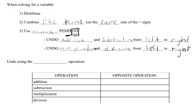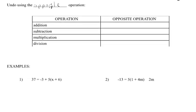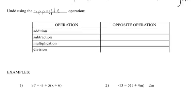You undo using the opposite operation. What is the opposite of addition? Well, if you add money to your bank account, that's putting money in. Taking money out is subtracting. The opposite of addition is subtraction, so the opposite of subtraction is addition. The opposite of multiplication is division, and the opposite of division is multiplication.